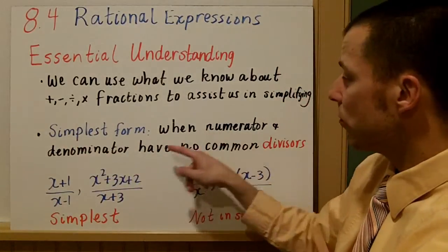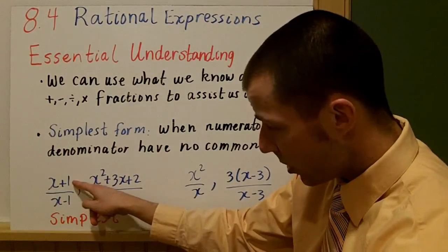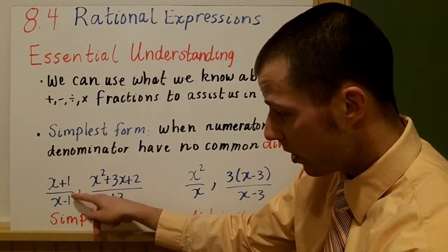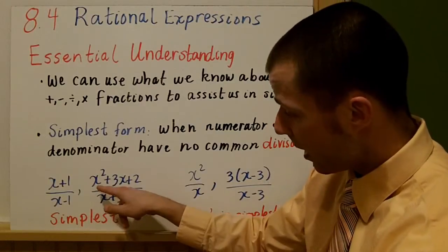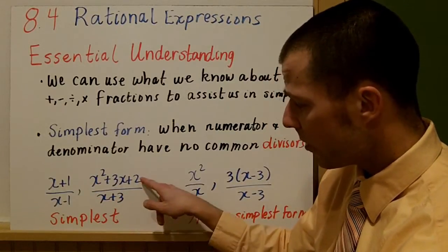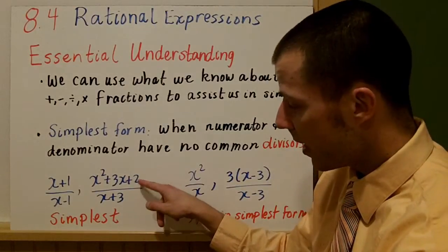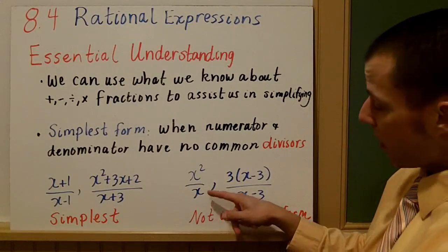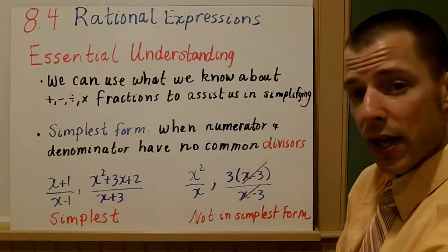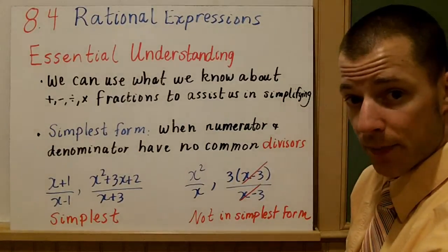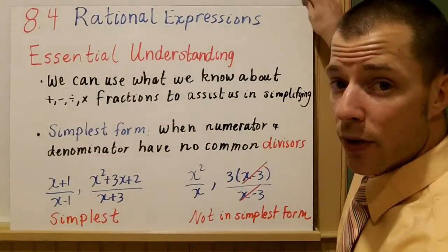Simplest form simply means that the numerator and denominator have no other common divisor. For example, x plus 1 over x minus 1 — there's nothing common; even though they look like the same term with different signs, they're not common. And for this polynomial, the factors of x squared plus 3x plus 2 don't include x plus 3, so nothing is common there. However, x squared over x can be simplified, and here we could simplify and get rid of the x minus 3 — that would not be in simplest form. In the next few examples, we're going to look at how to simplify rational expressions, starting with multiplication.